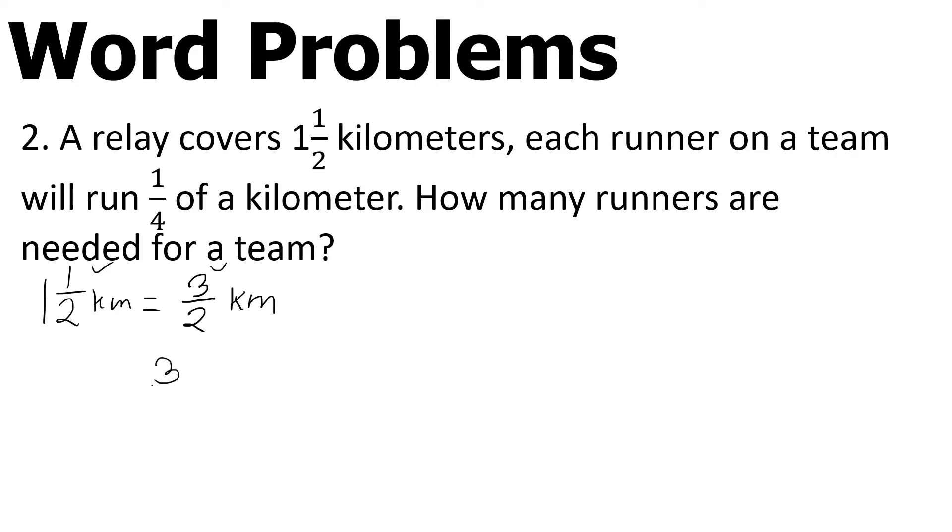This is division. All the kilometers to be run, three-halves, divided by what each runner will run. Because we're asking how many runners. Cross-multiply: three times four equals twelve on top, one times two equals two on the bottom. Twelve divided by two equals six. Therefore, six runners are needed. Correct!